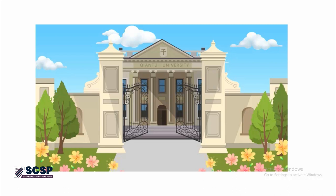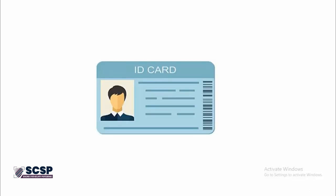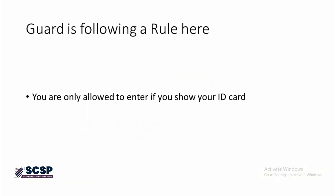The university has a gate in front, and usually there are guards at the university gate. What the guards do is they stop you and ask you for your ID. If you show your ID, you are allowed to go in, and if you don't show your ID, you're not allowed to go in. So the guard is following a simple rule: you are only allowed to enter if you show your ID card.